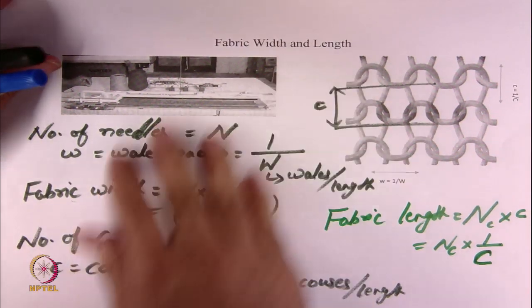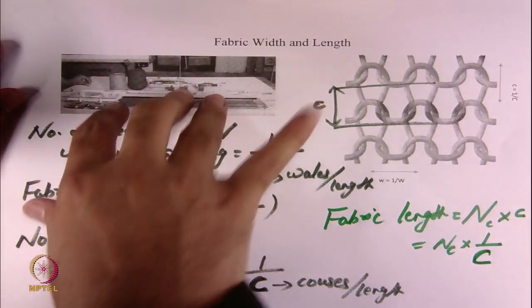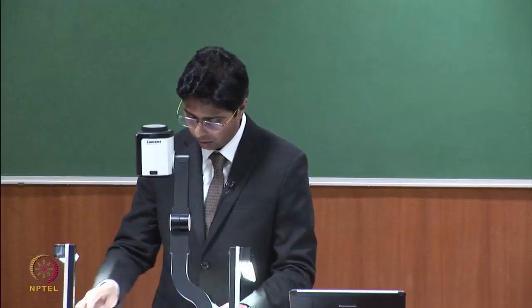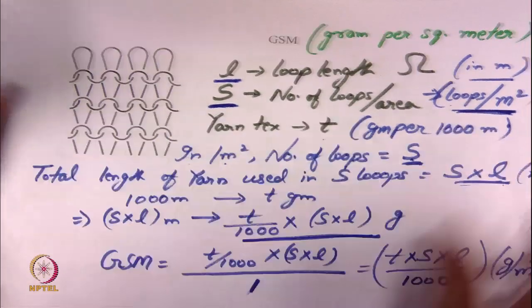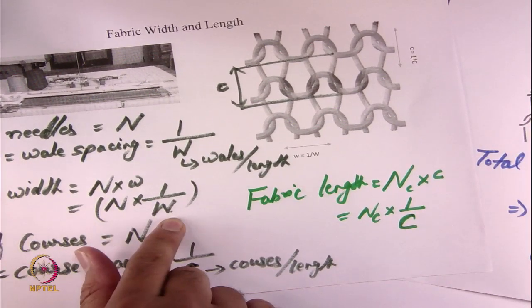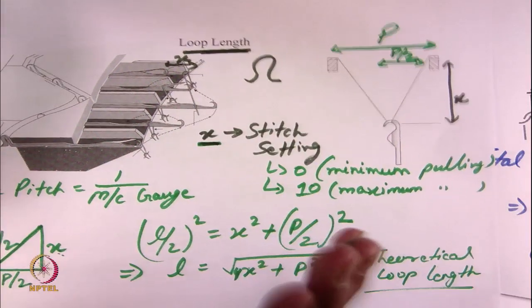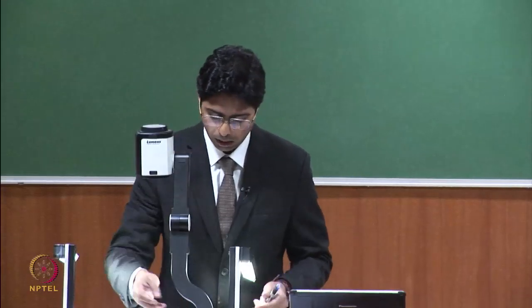You can see that if you understand the machine parameters and know a few variables, you can find out GSM theoretically, as well as fabric width, fabric length, and loop length. All the structural parameters — loop length, fabric width and length, and GSM — can be calculated. Let us now solve a very simple example and finish this lecture.